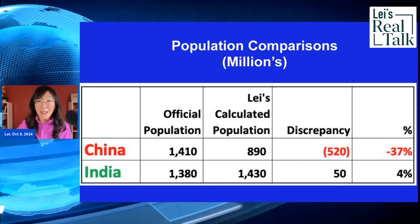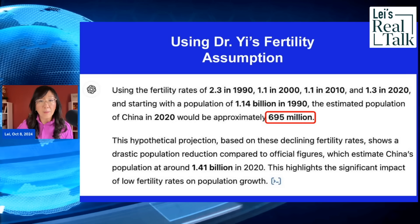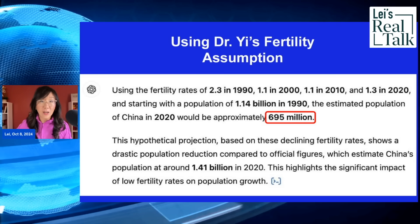I did another exercise: I asked AI to recalculate everything by replacing the official fertility rates of 1.7 and 1.5 from the year 2000 with Dr. Yi Fuxian's fertility assessment of 1.1. It came up with a shocking total population of 695 million — less than half of the announced 1.4 billion. By then I was convinced that the Chinese Communist regime has been faking its demographic data, and China's real population is probably 37 to 50% less than official figures.